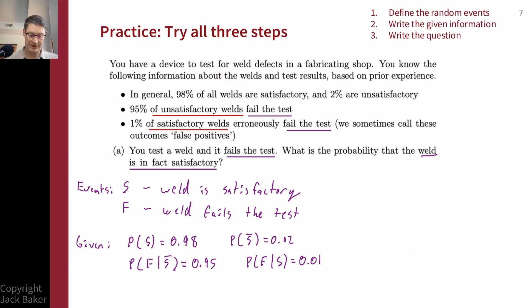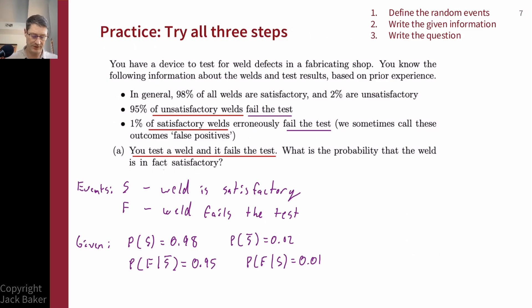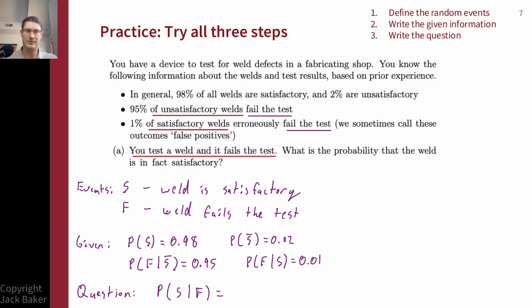Then we get to the final question. There's a statement before the question: 'we test a weld and it fails the test' — that's giving me information about the space of outcomes I'm looking at, specifically cases where the weld has failed. So that's a conditional probability. The question is: what's the probability that the weld is satisfactory, given that it failed the test? So I write: P(S | F). That's how I'd write this question using the events defined in step one.